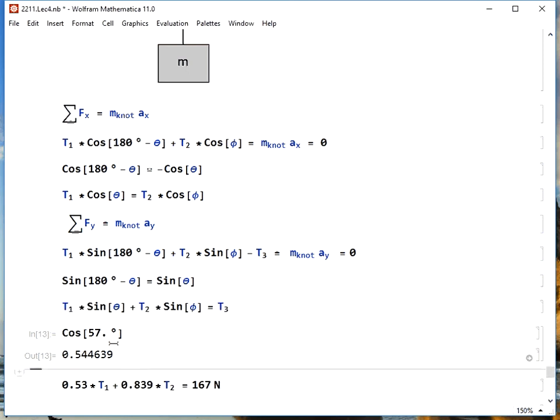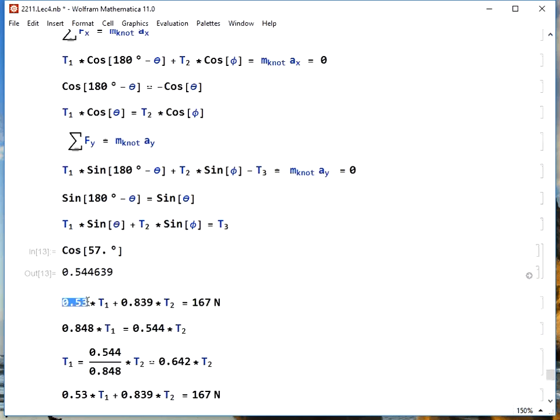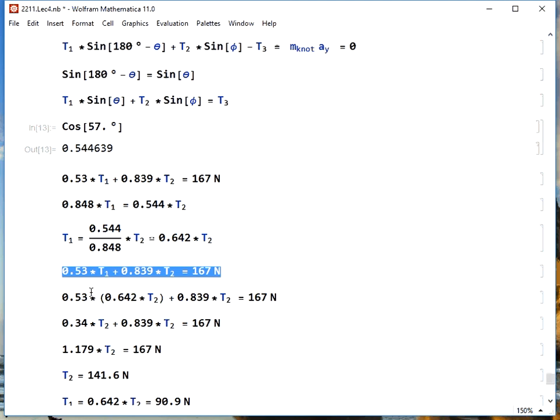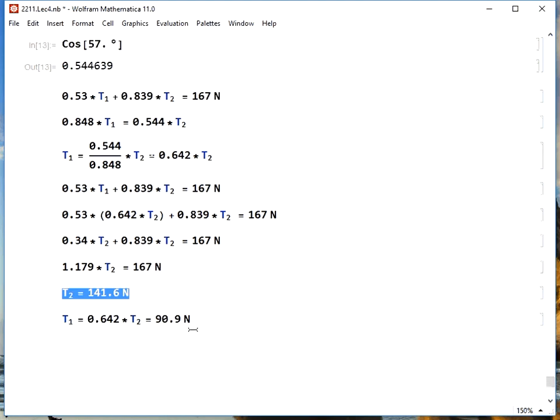We can plug in some numbers. What will we get for phi and theta if we evaluate these cosines and sines? And we get that this will be 0.53 T1 plus 0.839 T2 is 167 newtons. The other equation gives us 0.848 T1 equals 0.544 T2. That's this equation. And we can use this to figure out what T1 is in terms of T2. And we get that T1 is 0.642 times T2. We plug that in. We work back through the equations, do some algebra. And we get that T2 is 141.6 newtons and T1 is then 90.9.